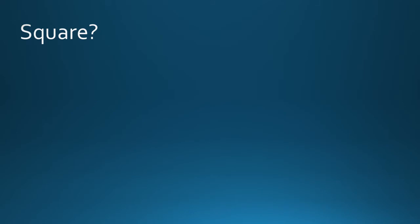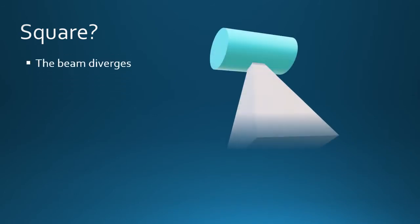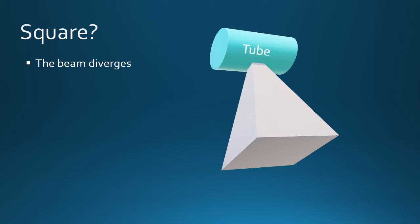So divergence accounts for beam reduction in intensity — but where does the square come in? Here is a tube housing and the resultant x-ray beam from a different perspective, with the tube tilted.